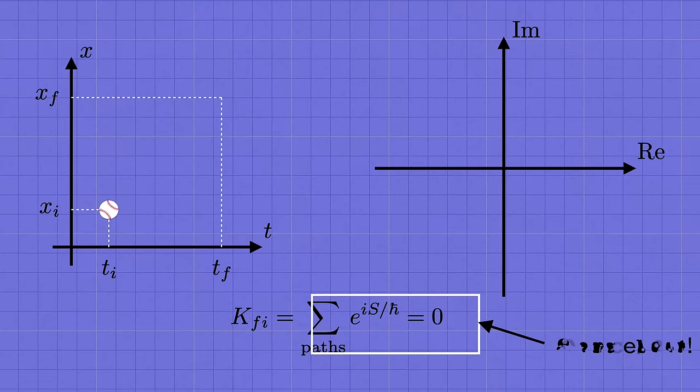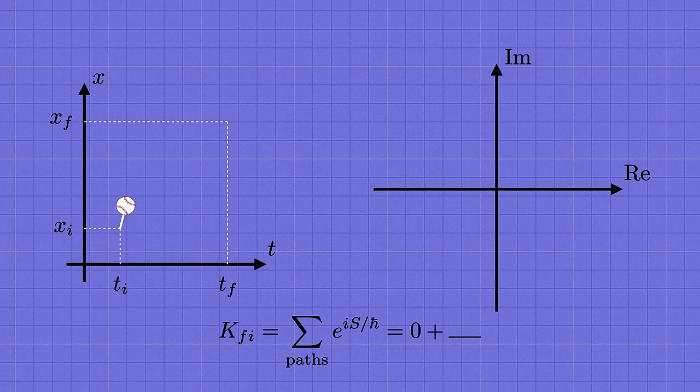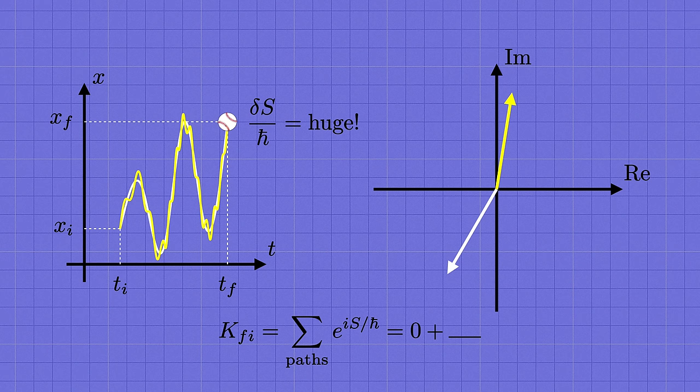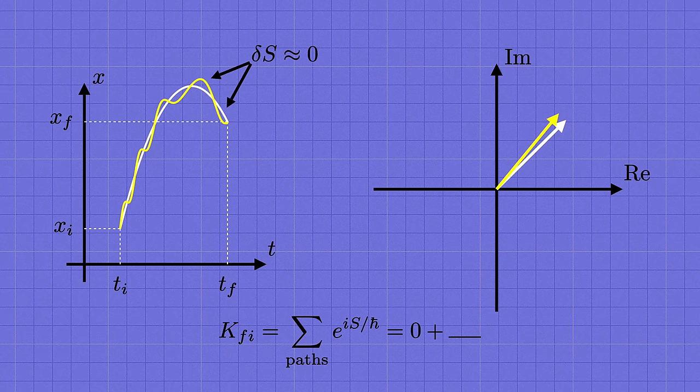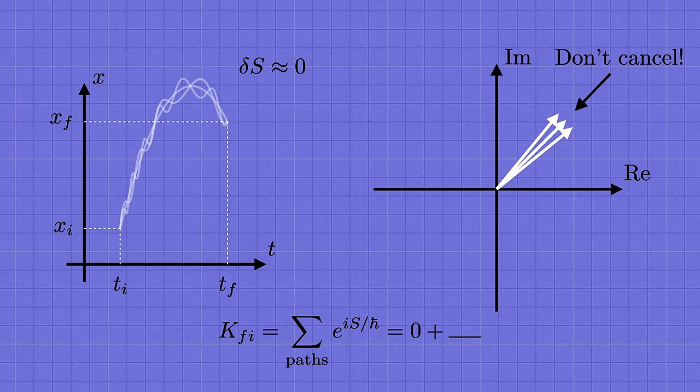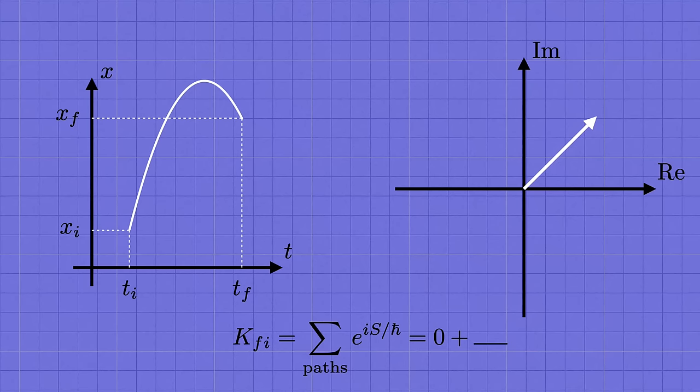Thus, for a classical object where the actions involved are much bigger than h bar, almost all the terms in the sum over paths add up to zero. Almost. There's one crucial exception. Again, the reason a generic path doesn't wind up contributing anything is that its neighbors, which differ from it only very slightly in shape, have significantly different actions, at least on the scale set by h bar. Then their corresponding arrows point in random different directions, and they tend to cancel out when we sum over many paths. But suppose that there's some special trajectory for which the action is approximately constant for it and for any nearby path. Then the arrows for these trajectories would point in very nearly the same direction, and those wouldn't cancel out.